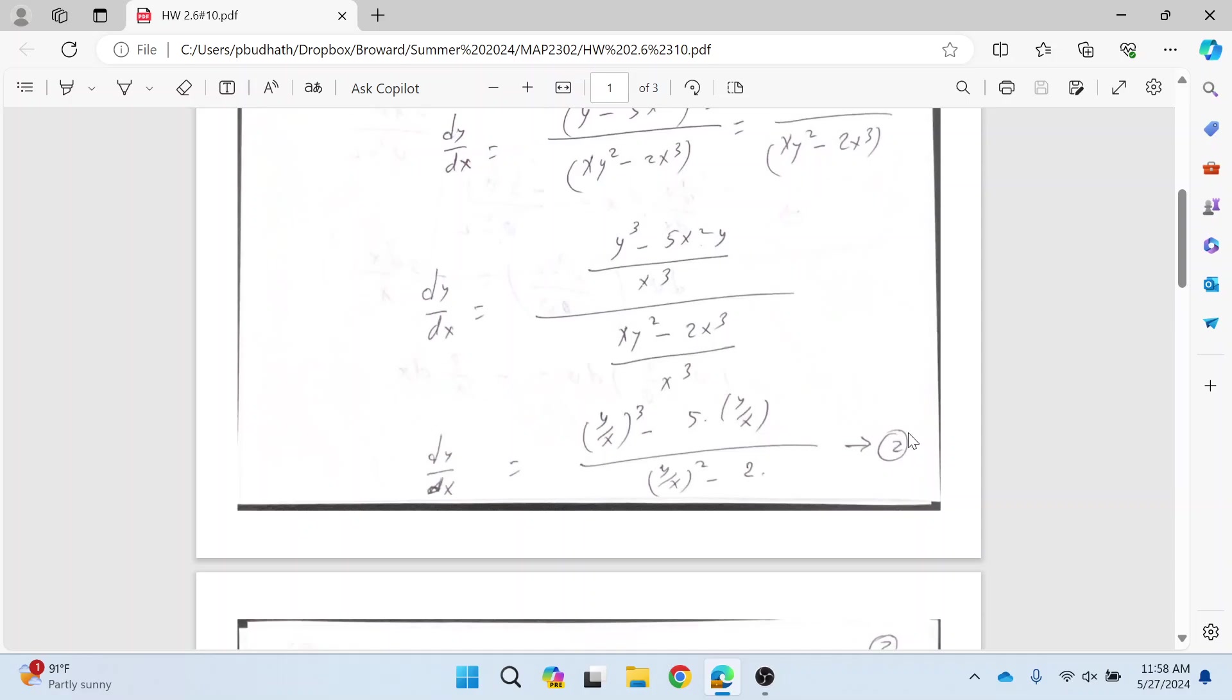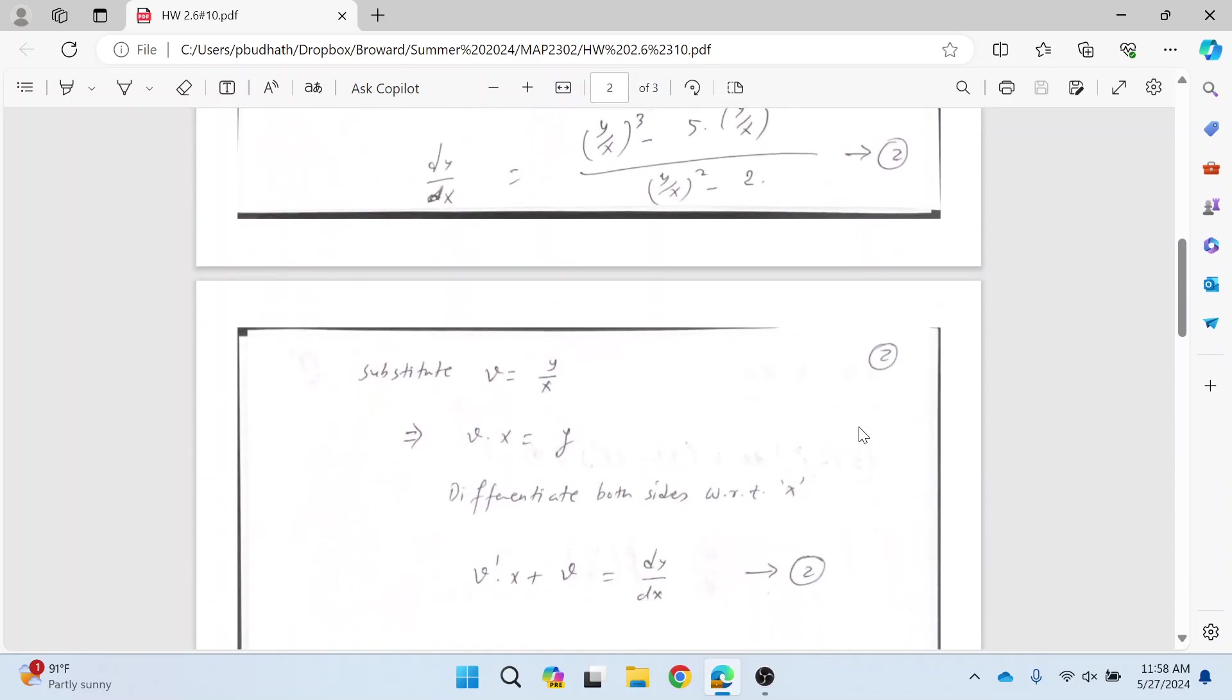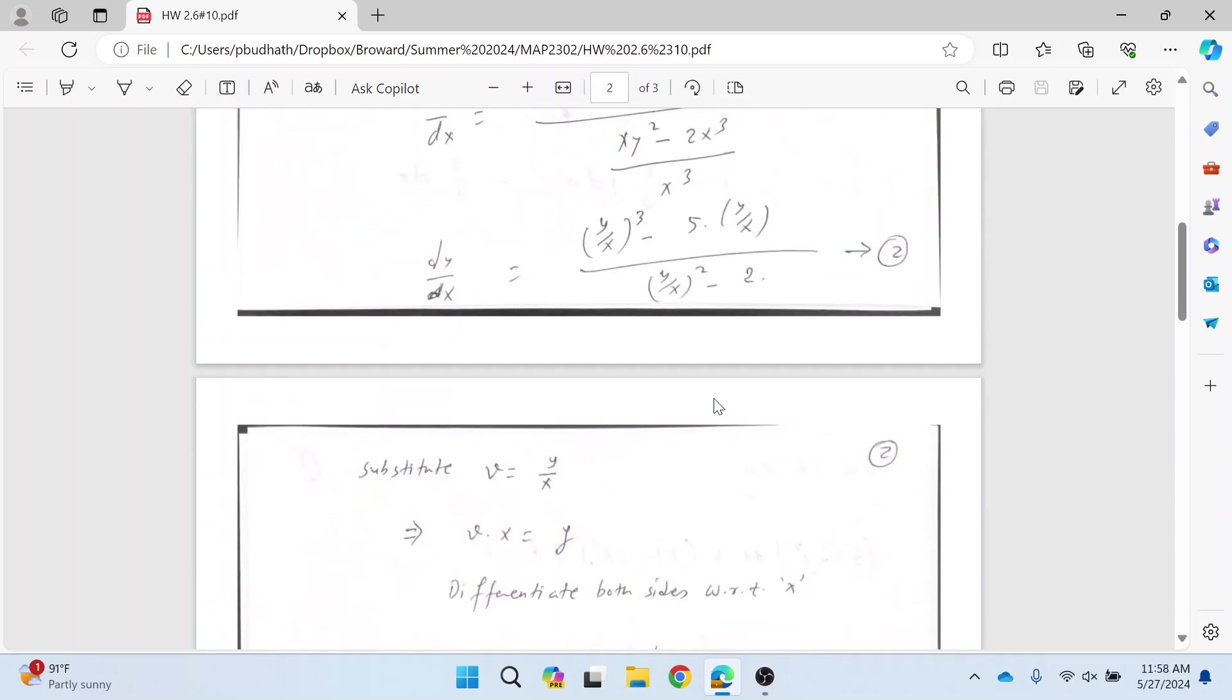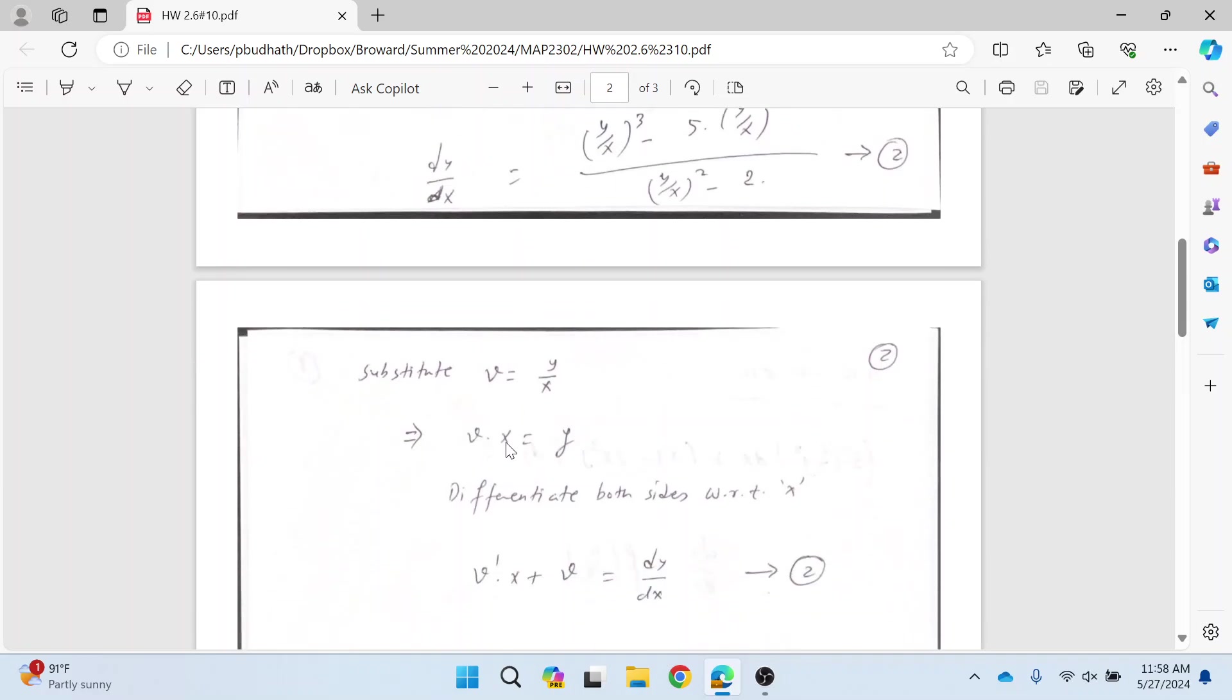It's supposed to be equation number one, okay, not the two. And after that, our goal is to substitute for this y over x. I'm going to use v as y over x, and this means v times x is y.